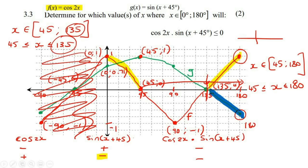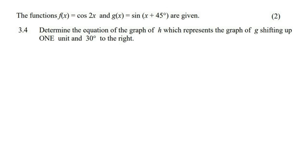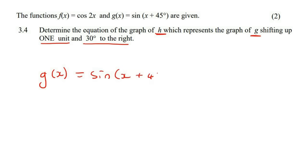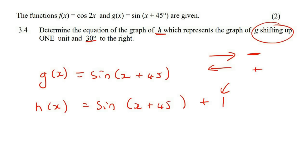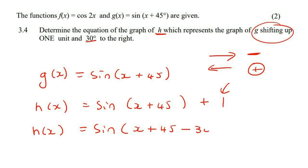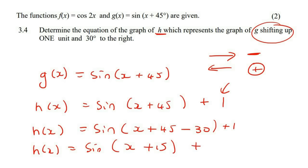The last part: determine the equation of h, which is graph g shifted one unit up and 30 degrees to the right. g is currently sin(x + 45). Shifting one unit up means adding plus 1. Moving 30 degrees to the right means minus 30 inside the bracket (right shift = minus). So h(x) = sin(x + 45 minus 30) + 1, which simplifies to sin(x + 15) + 1.